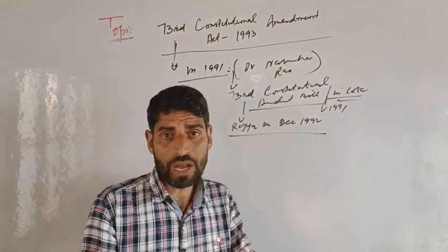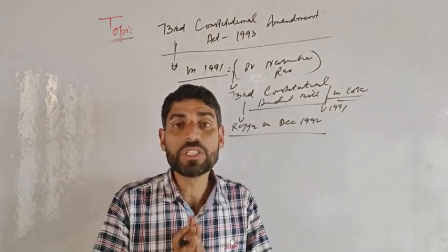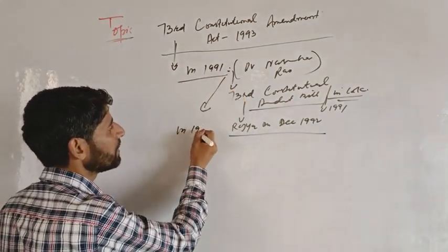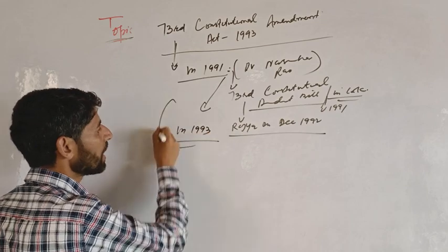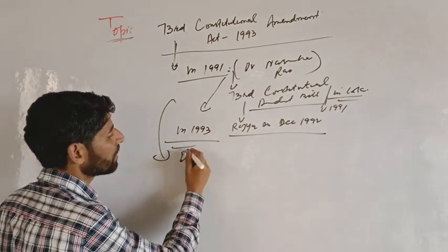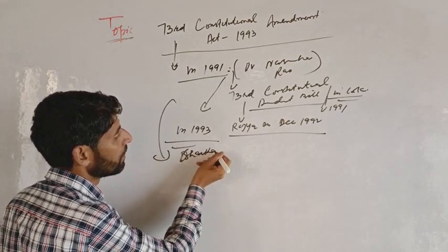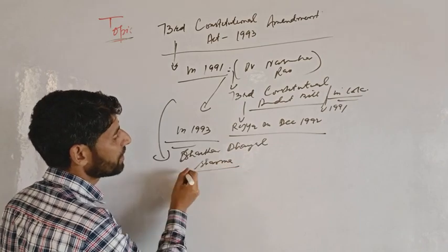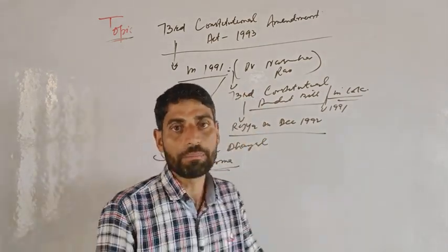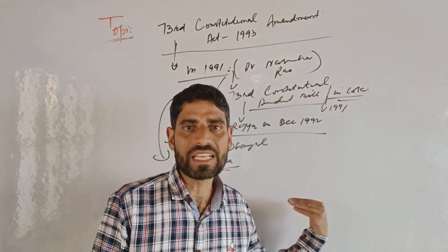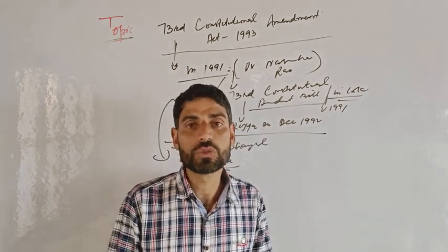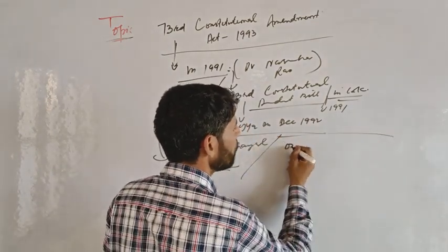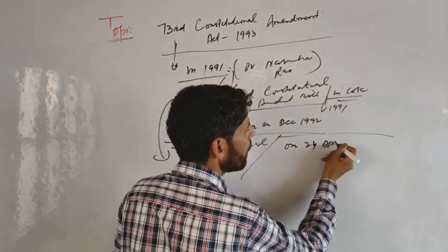When this bill was passed in both houses of Parliament, it received the President's assent in 1993. At that time, the President of India was Shankar Dayal Sharma. The bill became the 73rd Constitutional Amendment Act and was enforced on 24th April 1993.